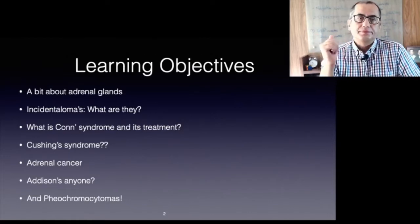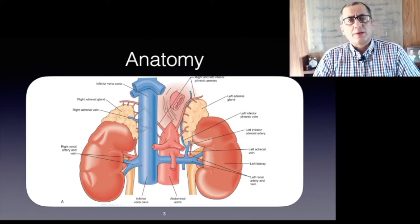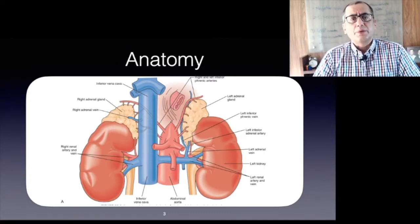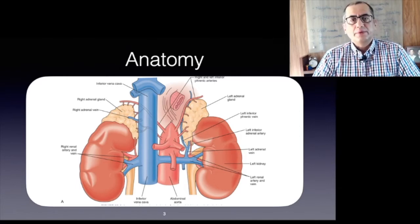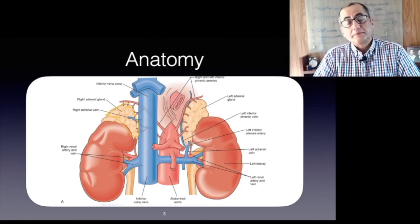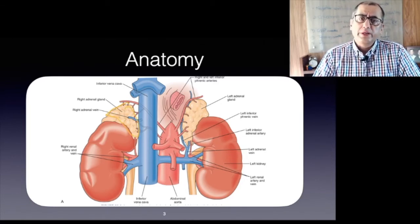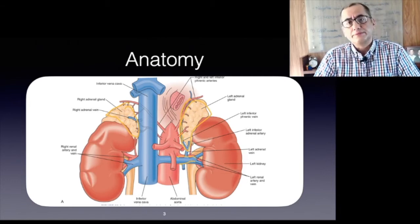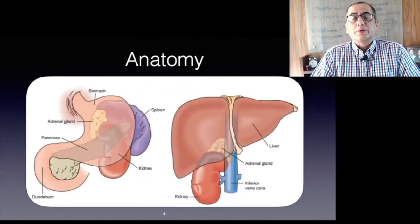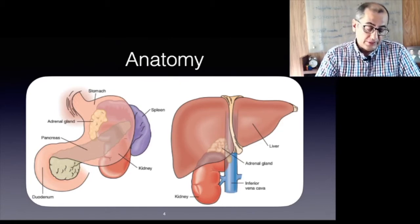Weighing in at approximately 4 grams each, these retroperitoneal glands are situated at the upper poles of the kidneys within Gerota's capsule. The right adrenal gland is located between the right liver lobe and the diaphragm, close to and partly behind the inferior vena cava. The left gland lies on the upper pole of the corresponding kidney, reaching the renal pedicle, and is covered by the pancreatic tail and the spleen.